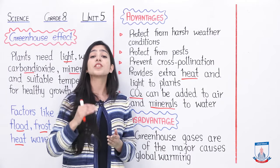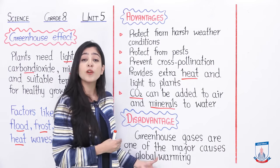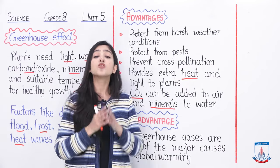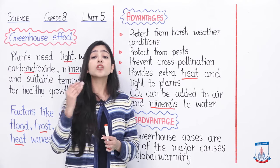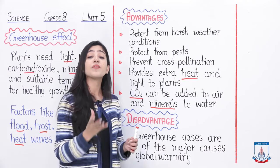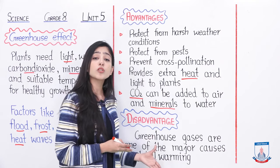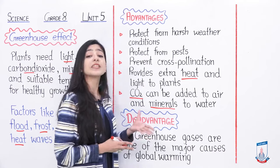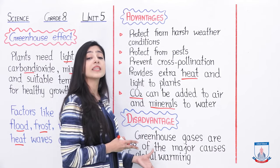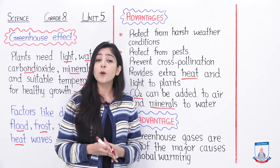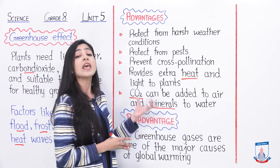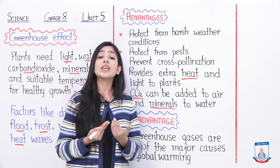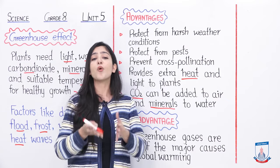The increase in the overall temperature of the planet due to global warming causes a lot of damage. For example, the ice caps at the north and south poles will melt, floods will come, and there will be great loss to crops, plants, human life, and animals. It has been found that greenhouse gases are a major contributor to global warming and the increase in heat on our planet.